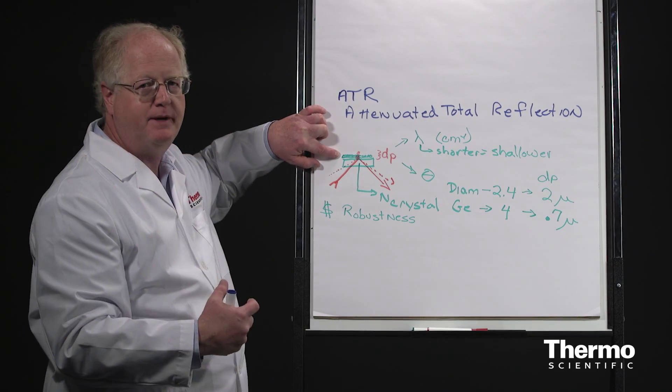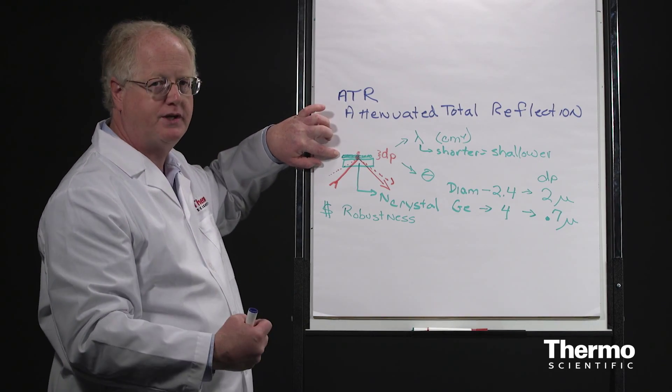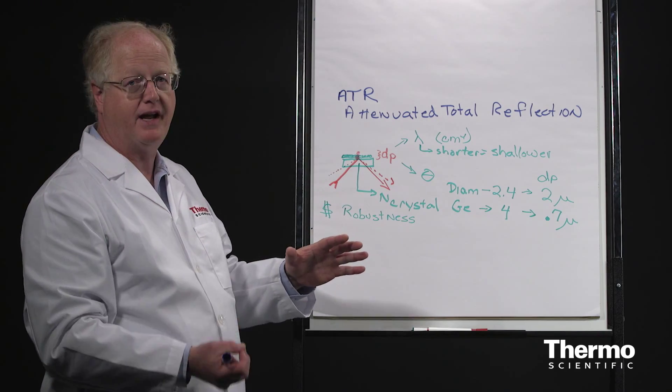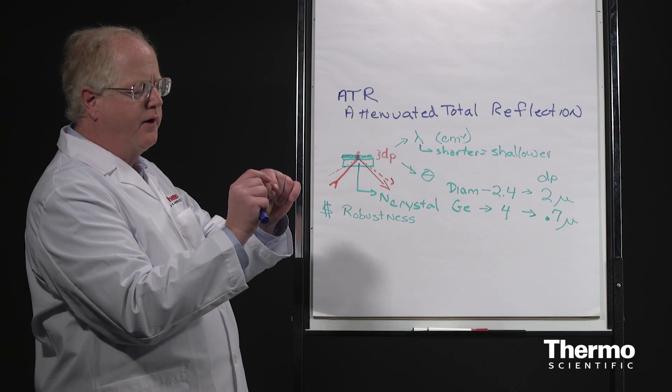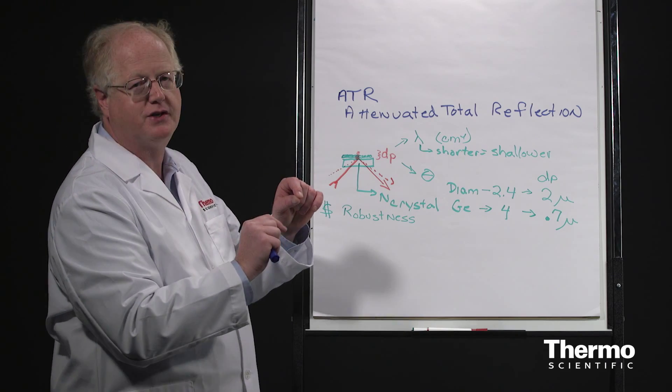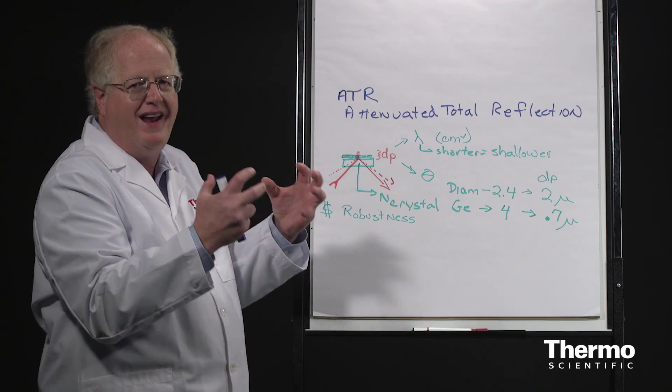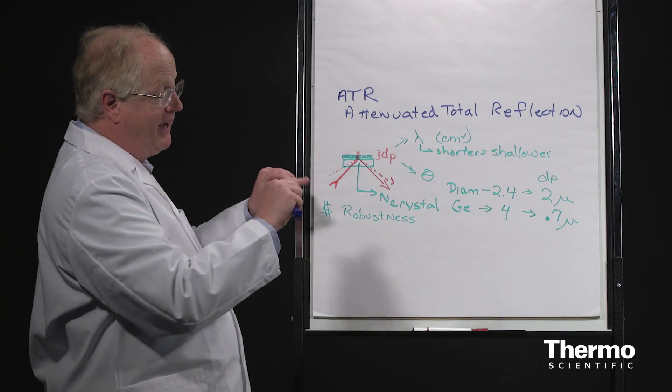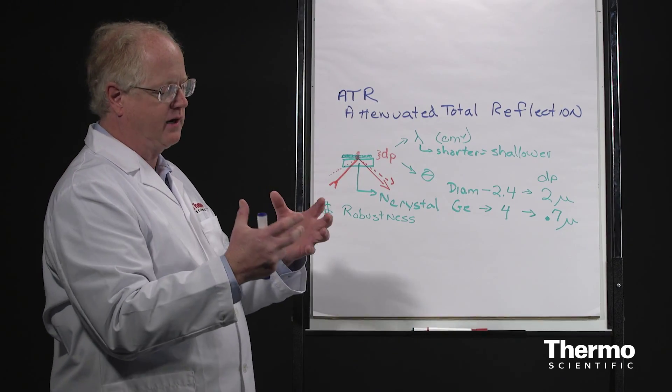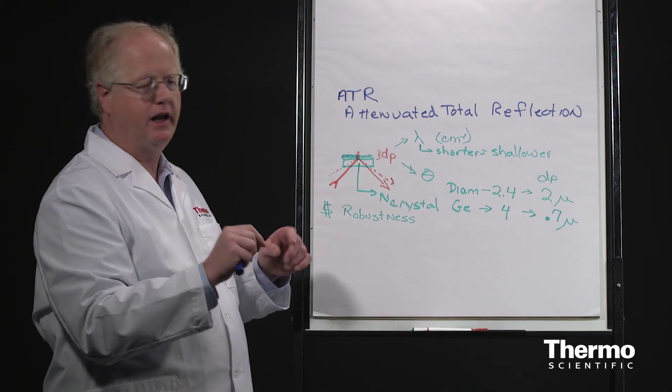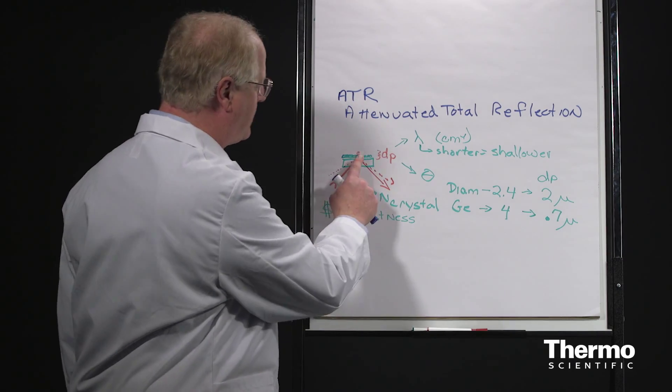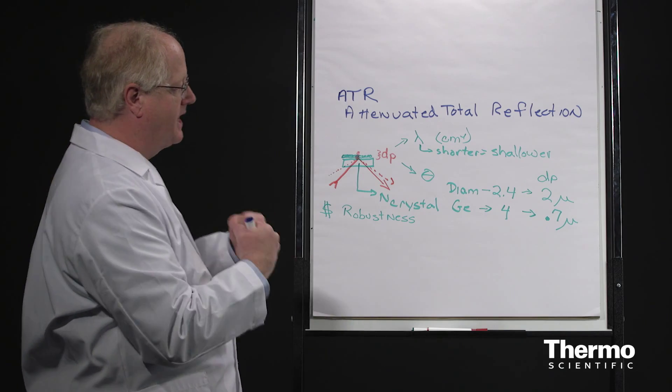You have to have an intimate contact of the sample with the crystal. With a liquid, there's no problem because the liquid just spreads out over the surface. However, for a solid, if you have a powder which consists of little crystals, the only place that you're getting signal is where those little crystals are touching the surface. If it's a very highly granular powder, then you may get weak signal because you're not making good contact. And if you have something like a brick or rock that has a high degree of irregularity, it won't contact very well at all and you get very poor signals. So the first thing is that intimacy of contact.